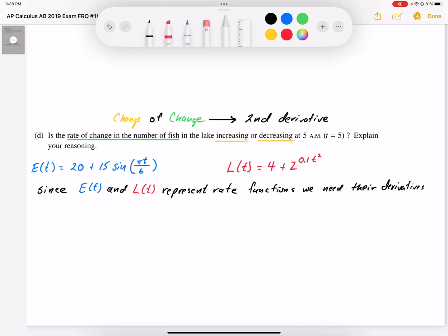In Part D, it says, is the rate of change of the number of fish in the lake increasing or decreasing at t equals 5?